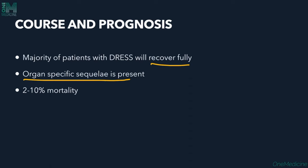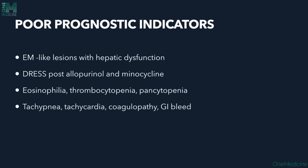Mortality from DRESS is 2–10%, which is significant. Poor prognostic indicators include erythema multiforme-like lesions with hepatic dysfunction, DRESS following allopurinol or minocycline (due to greater kidney involvement), associated eosinophilia, thrombocytopenia, pancytopenia, tachypnea, tachycardia, coagulopathy, and gastrointestinal bleeding.